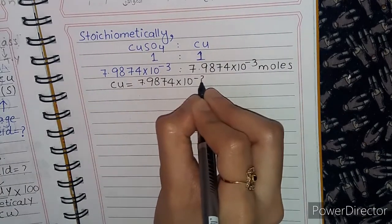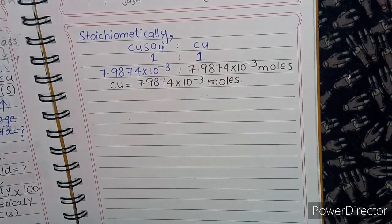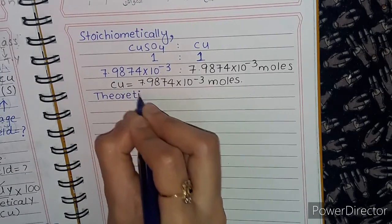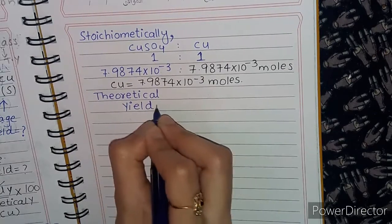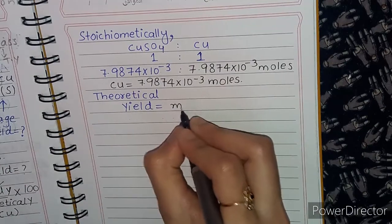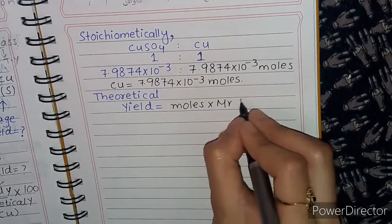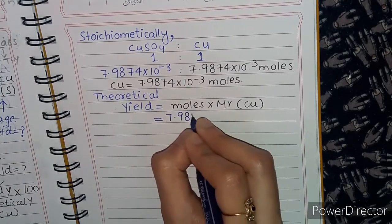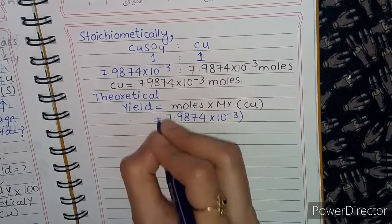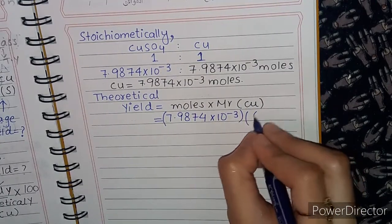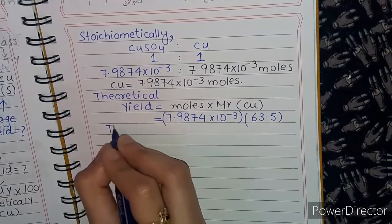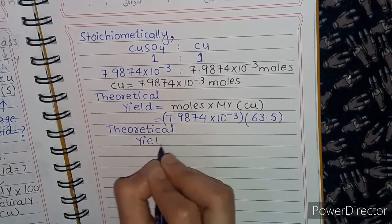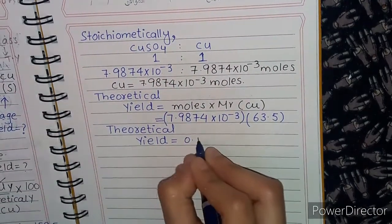Now we will find the theoretical yield. Using moles multiplied by molar mass of Cu: 7.98 × 10⁻³ moles multiplied by 63.5 grams per mole. This gives us a theoretical yield of copper equal to 0.507 grams.